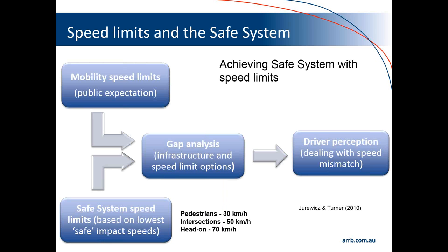We've done a lot of work on how this might impact the setting of speed limits and provision of infrastructure in Australia. This graphic shows how to reconcile that knowledge around critical speeds and current speed limit regimes. We need to understand firstly the mobility speeds, the public expectations, and the current speeds — on arterials and intersections, for instance, it might be 70 km/h. We then look at what the critical speeds based on human tolerances might be — in this case, we know the intersection speed should be 50 km/h. There's a gap analysis between those two figures.